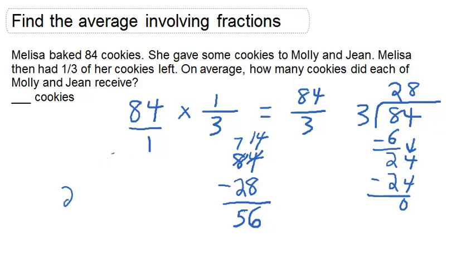If we divide 56 by 2, we're going to be able to figure out what was the average number of cookies that Molly and Jean had, because there was two of them.